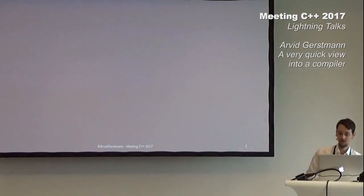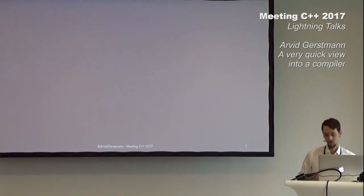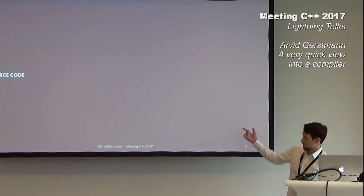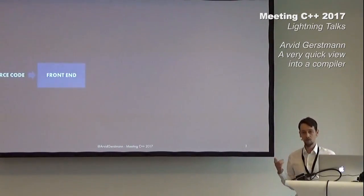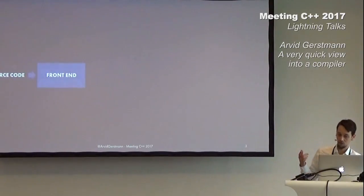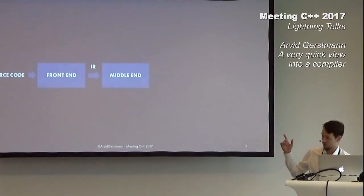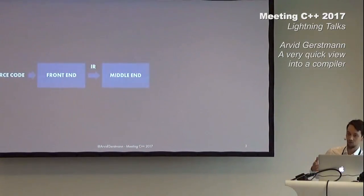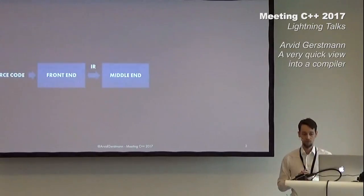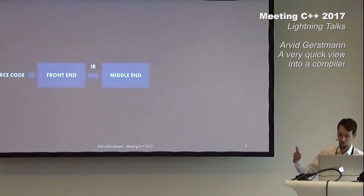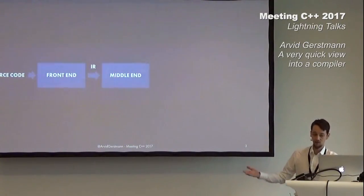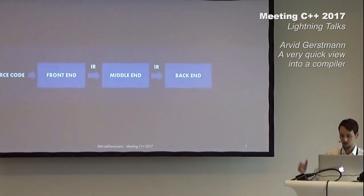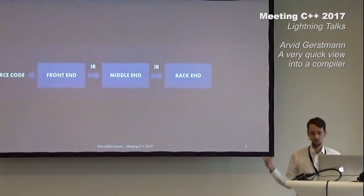A compiler is usually represented as consisting of multiple separate stages. On the left we have our source code, which is passed to the compiler's front end. The job of the front end is to convert the human-readable source code into a so-called intermediate representation, from now on referred to as the IR. The IR is then passed to the middle end, commonly also called the optimizer. The optimizer's job is to analyze and transform the IR into a more optimized version of itself without changing the meaning of it — it is where most of the compiler's time is spent. Last but not least comes the back end, converting the optimized IR into machine-dependent object code.